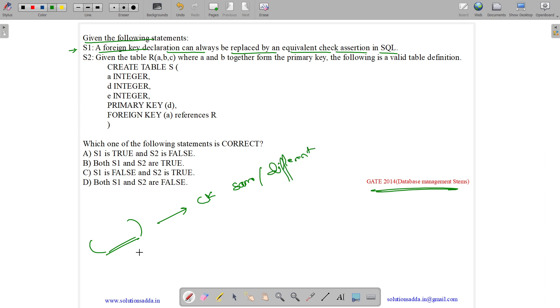Now foreign key has some referential integrity constraints like on deletion it will have on delete cascade, on delete no action, on delete rollback.